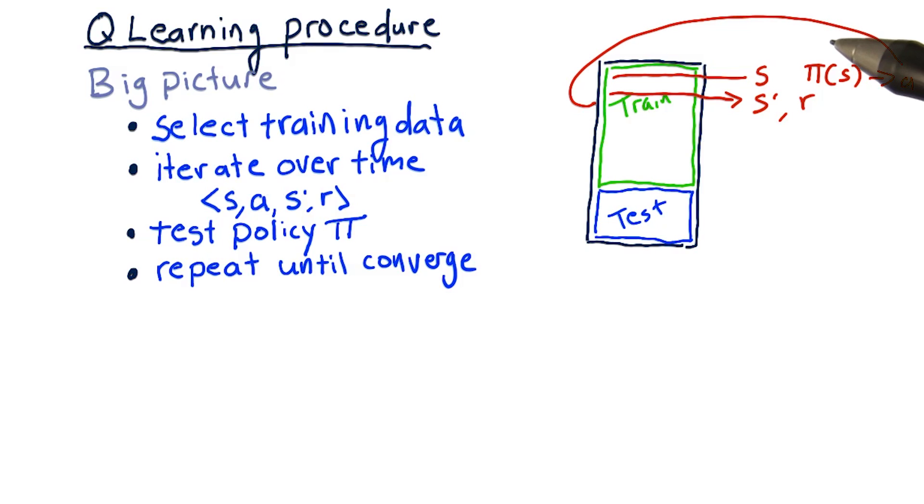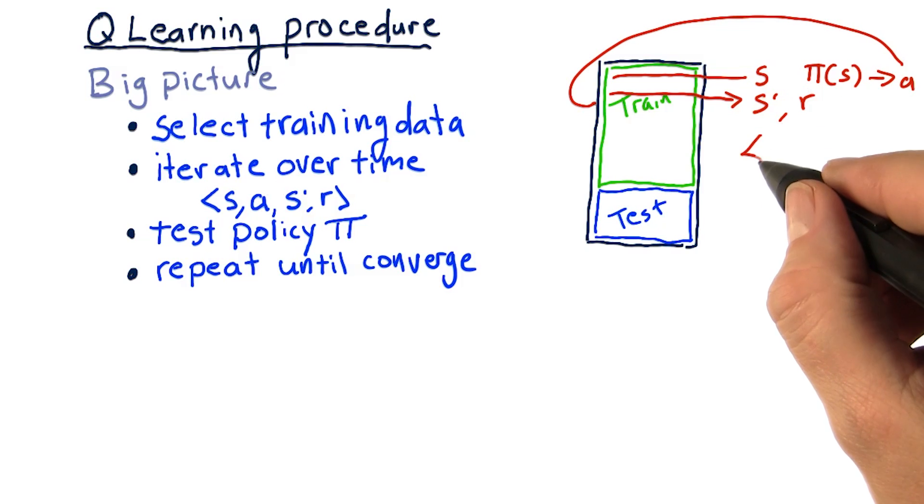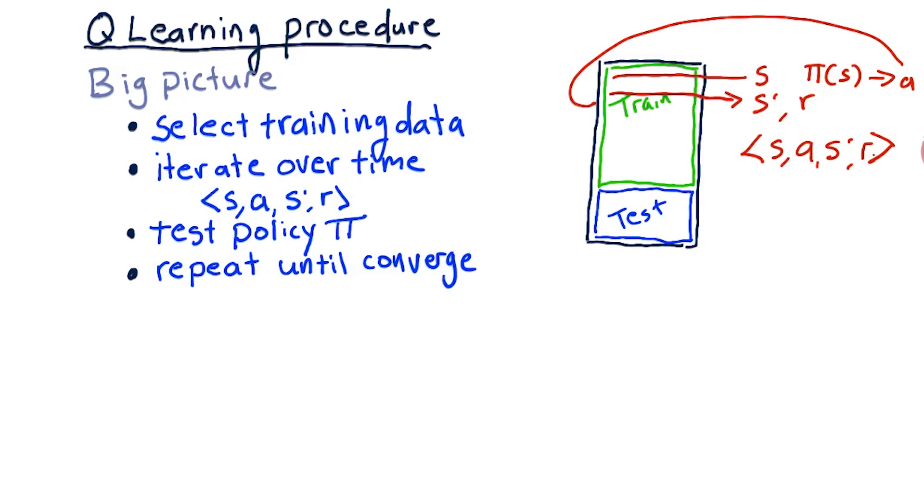So, after one iteration here, we've got an S, an action, an S prime, and an R. Or an experience tuple. And we use that experience tuple to update our Q table.